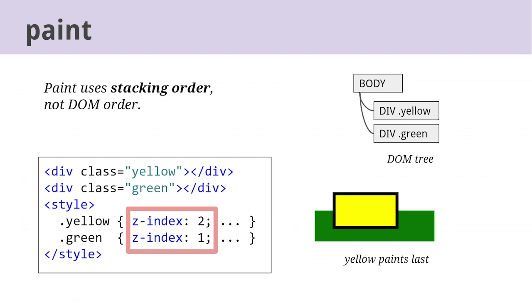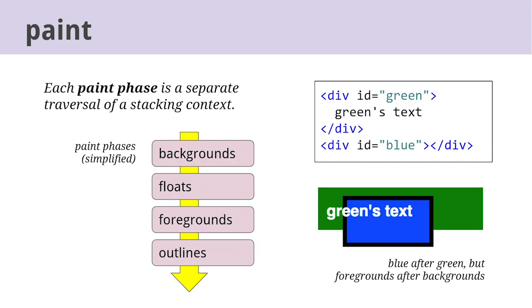It's important to paint elements in the right order so they stack correctly when they overlap. Paint uses something called stacking order, which is a little different from DOM order because it can be controlled by a style property called z-index. In this example, the yellow box paints after the green box even though it comes first in the DOM. It's even possible for an element to be partially in front of and partially behind another element because of the way CSS is written. Paint runs in multiple phases, and each paint phase does its own traversal of something called a stacking context — so the background phase paints all backgrounds before the foreground phase paints any text.